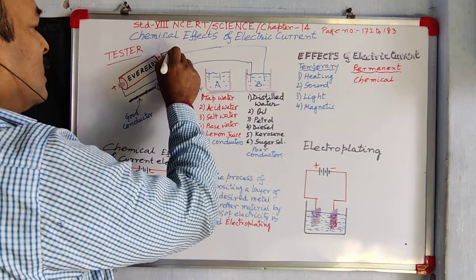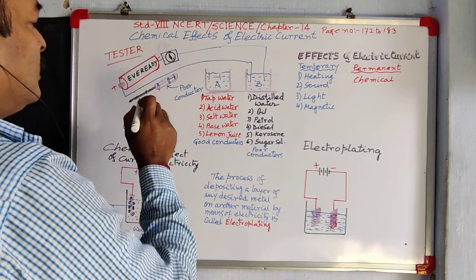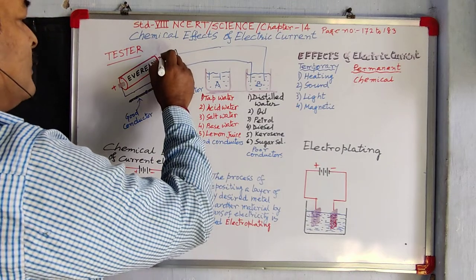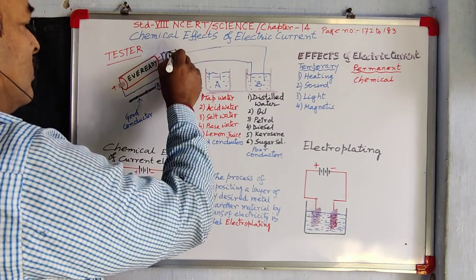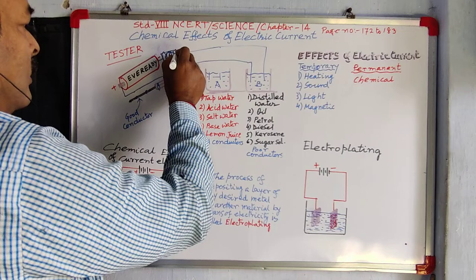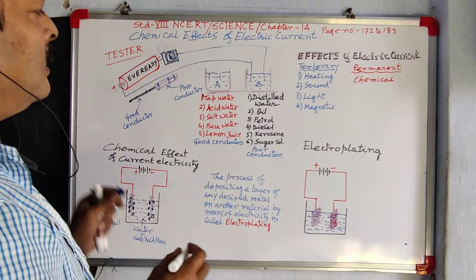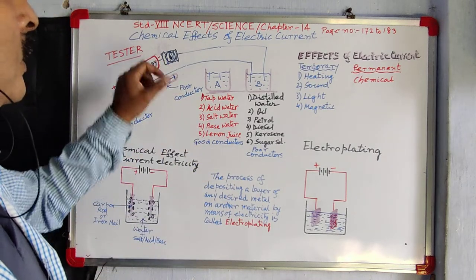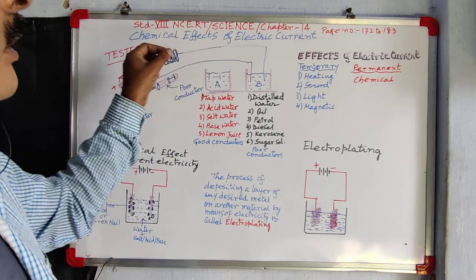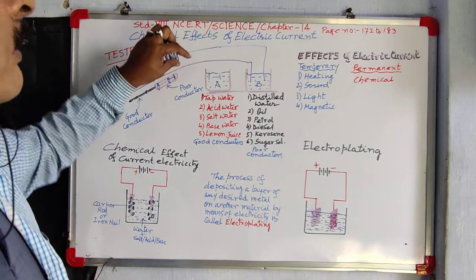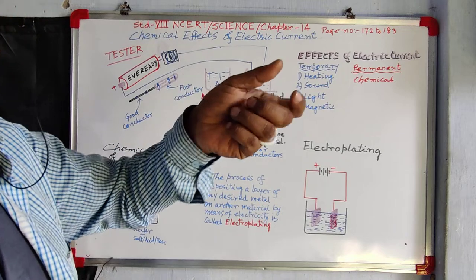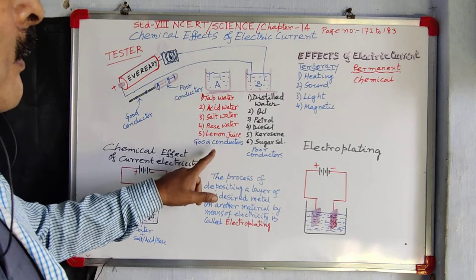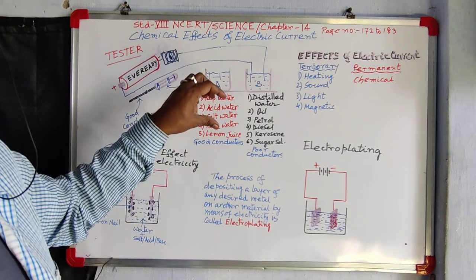If I wrap some wire over the magnetic compass, whenever electricity is passing, this magnetic compass will deflect — from north-south it will deflect to east-west. If it is a good conductor, only then will deflection be shown.